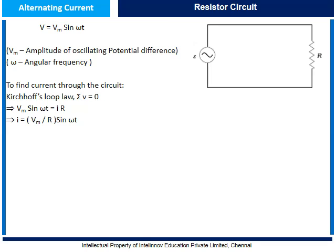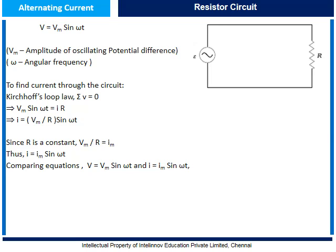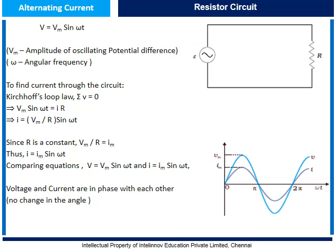On rearranging, we get I equal to Vm/R sine ωt. Since R is a constant, Vm/R can be written as Im. Thus, I can be written as I equal to Im sine ωt. Comparing V equal to Vm sine ωt and I equal to Im sine ωt, we find that voltage and current are in phase with each other — there is no change in the parameter ωt. The average power dissipated in this circuit is given by P equal to Im²R/2.